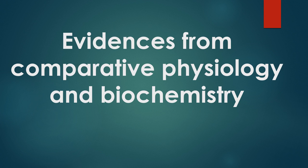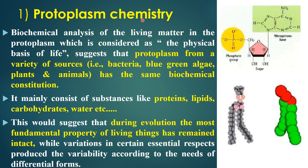Today I'm going to explain evidences from comparative physiology and biochemistry. First is protoplasm chemistry. Biochemical analysis of living matter in the protoplasm, which is considered as the physical basis of life, suggests that protoplasm from a variety of sources — bacteria, blue-green algae, plant and animal — has the same biochemical constitution. It mainly consists of substances like protein, lipid, carbohydrate, and water.